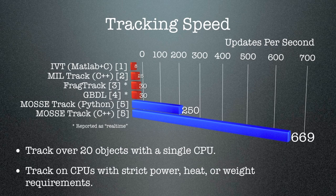So what can you do with this extra speed? One thing you could do is track multiple objects with a single CPU. Another thing is the tracker will scale very nicely to more limited CPUs. So if you have a scenario with strict power, heat, or weight requirements, this is a good way to do tracking. For this vehicle tracking scenario, you might think about putting this tracker on a small UAV.